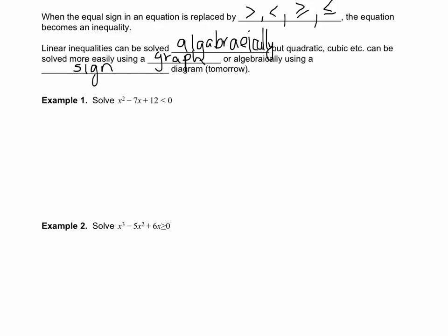Our first example asks us to solve x² - 7x + 12 < 0. In order to solve these we need to graph, and to graph we need to know the roots. To find the roots we need to factor our equation.